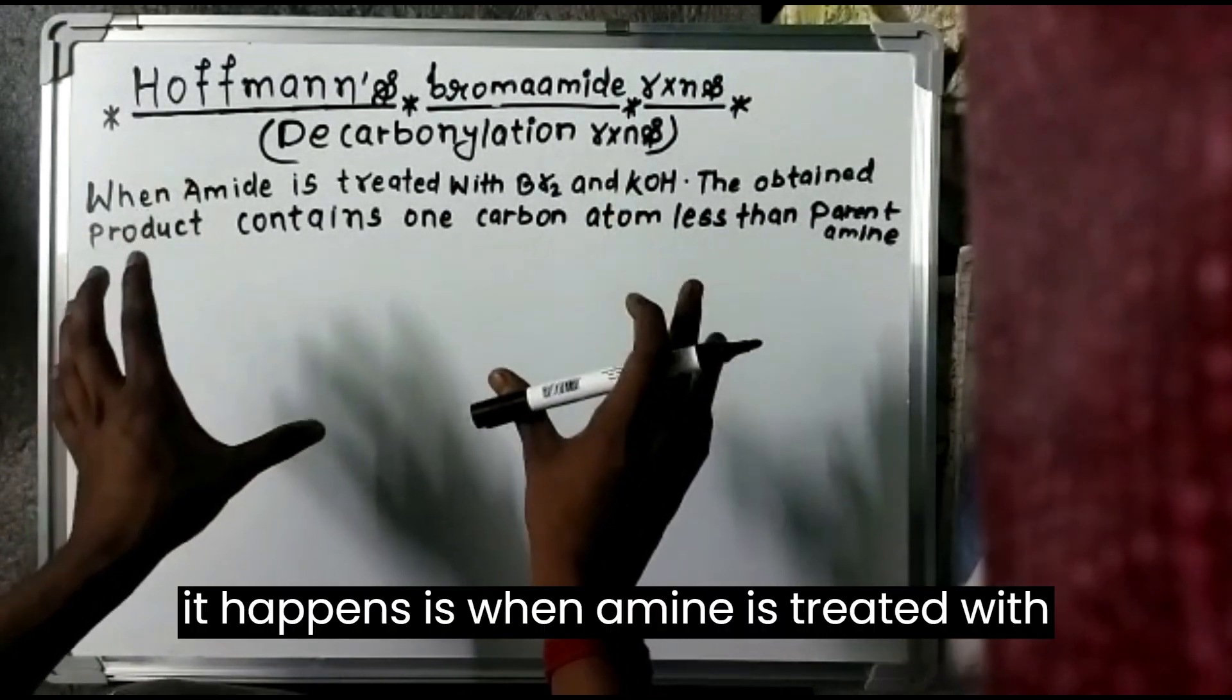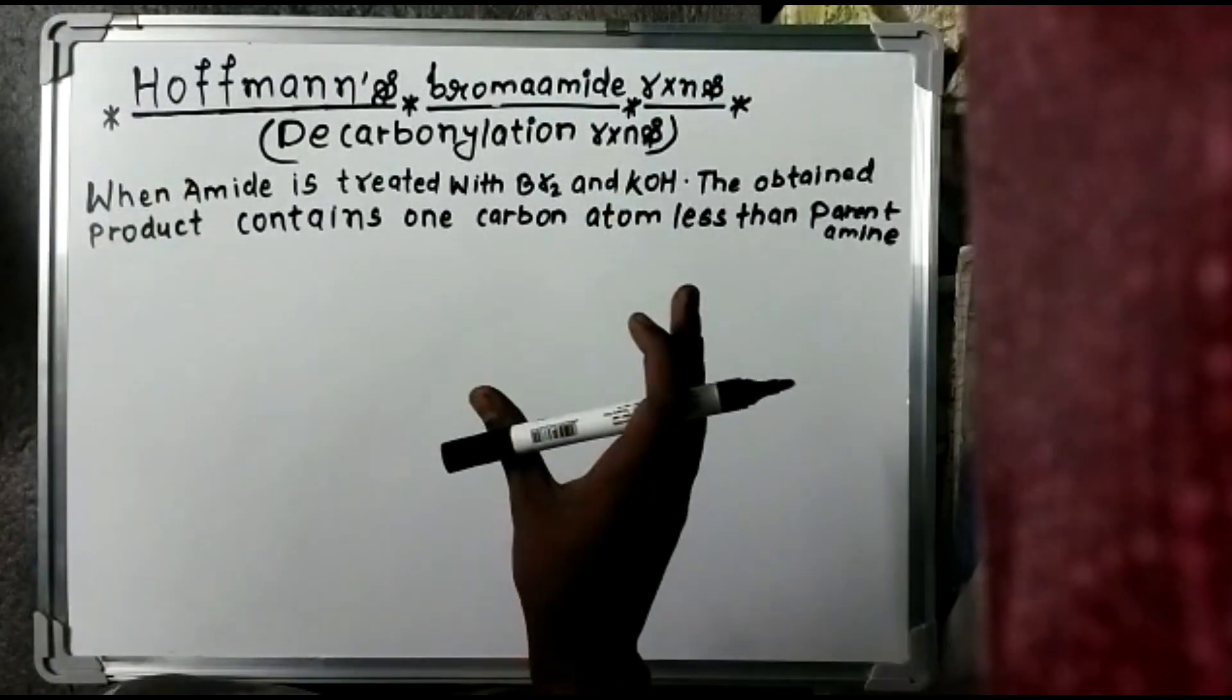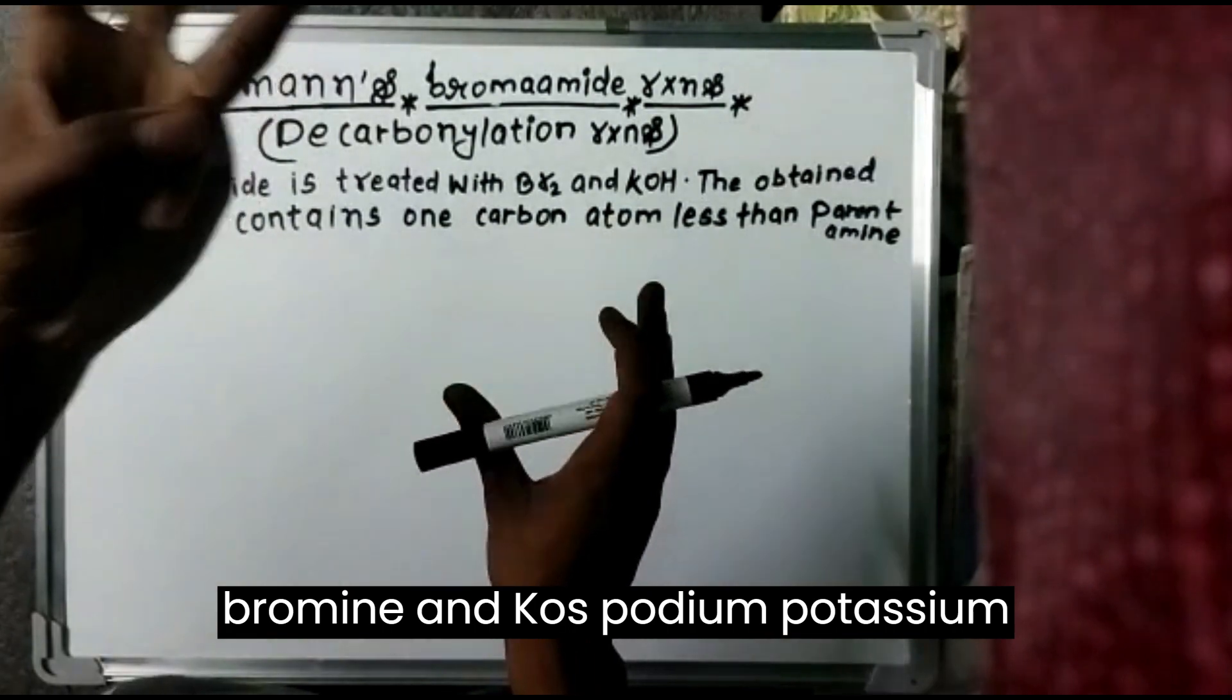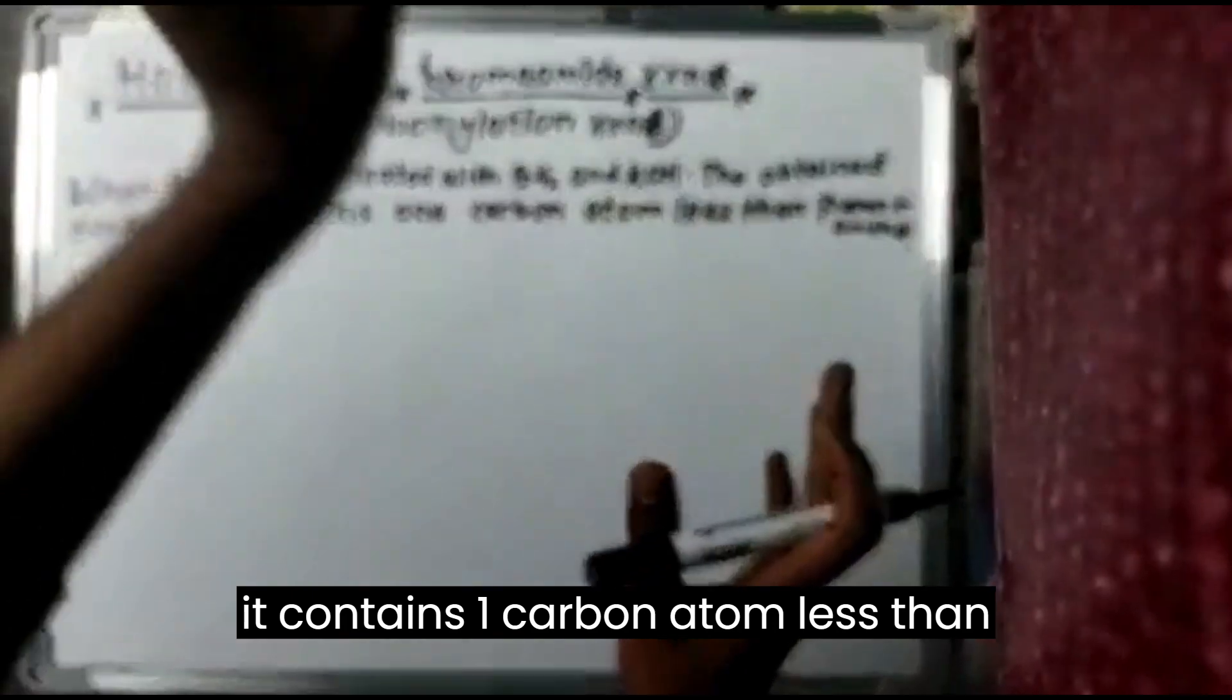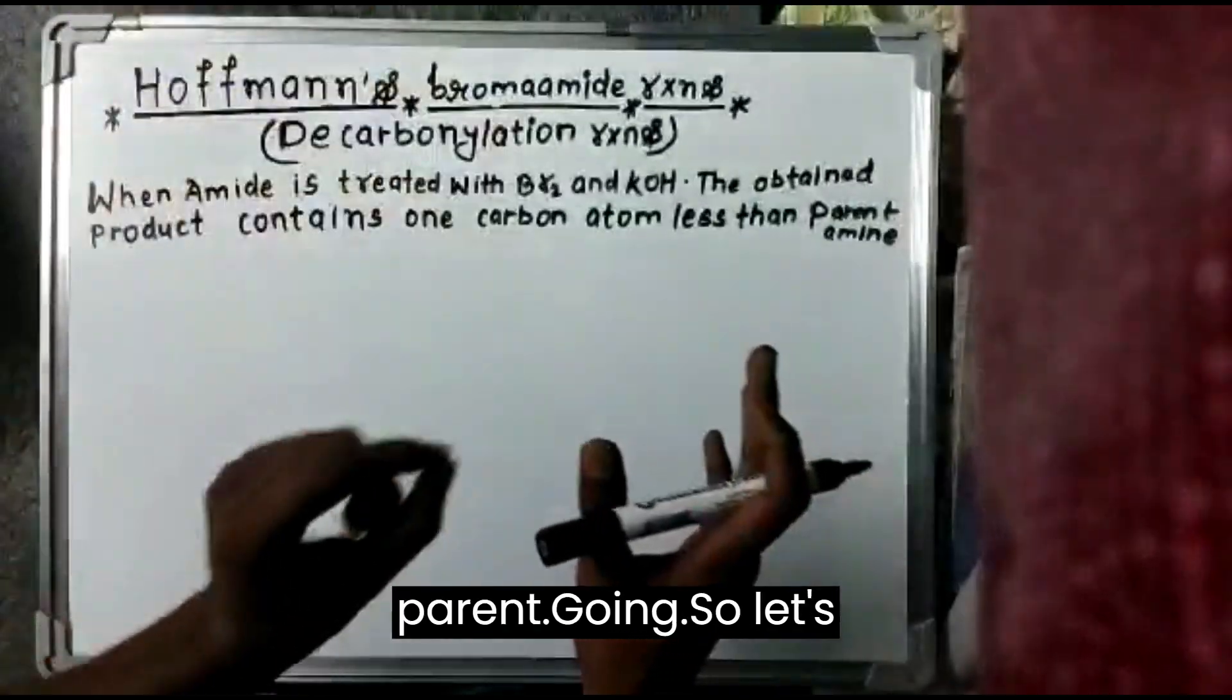So how it happens is when amine is treated with bromine and KOH, potassium hydroxide, then the product which comes, it contains one carbon atom less than parent amine.